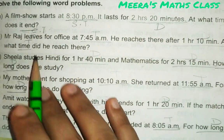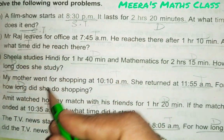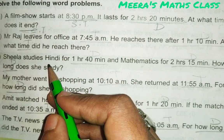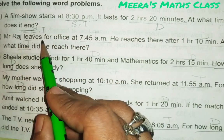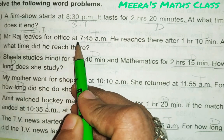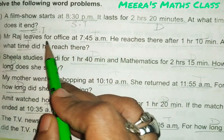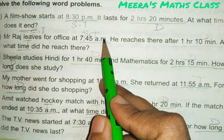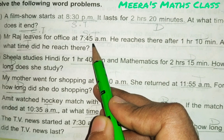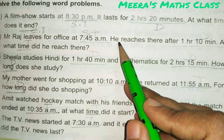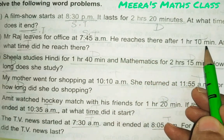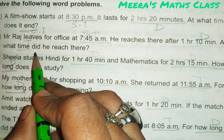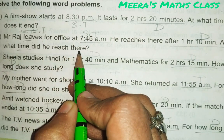I'll read one more question to help you understand. Mr. Raj leaves for office at 7:45 a.m. — that means starting time, underline it and write ST. You can write it on the top or below, that doesn't matter.